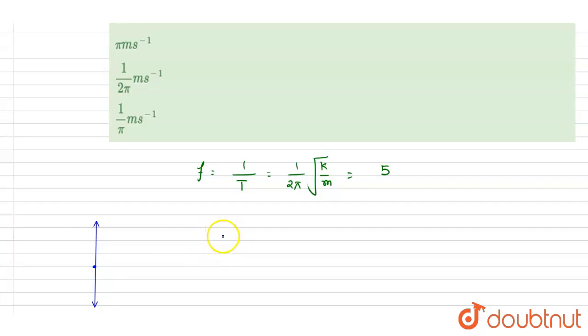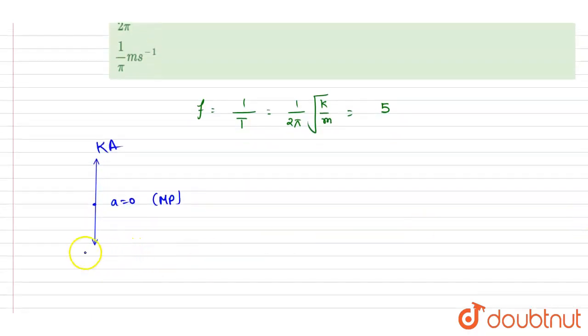So the velocity is zero at the position where the spring is in natural length, and the acceleration is zero at the mean position. And I am saying that extension in the spring is the amplitude, the maximum extension, and it is equal to mg. So from here you will get the amplitude, it will be mg by k.